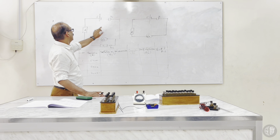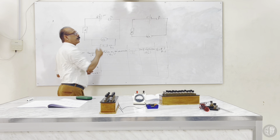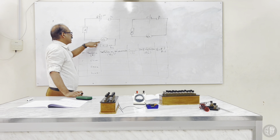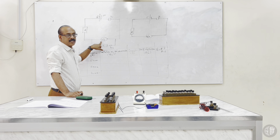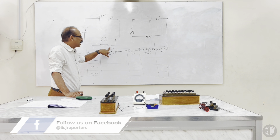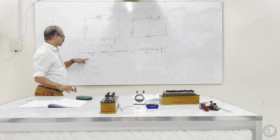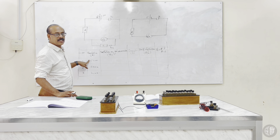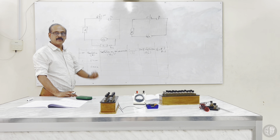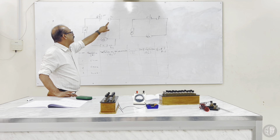The circuit has a cell of EMF 1.5 volts, a key K1, a resistance R, the galvanometer whose resistance is to be determined, another resistance box called the shunt, and a key K2. In the tabular column: first introduce 5000 ohms in resistance R. When only this circuit is active (K2 open, K1 closed), the galvanometer shows a deflection theta. Mark that deflection.